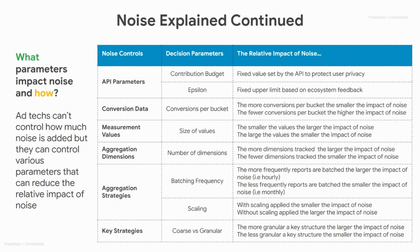Next, we're going to look at some aggregation strategies. The first one is batching frequency. The more frequently reports are batched, the larger the impact of noise. For example, if you batch per hour, you will most likely have fewer conversions in that batch than if you batched on a longer timeframe such as monthly or weekly.